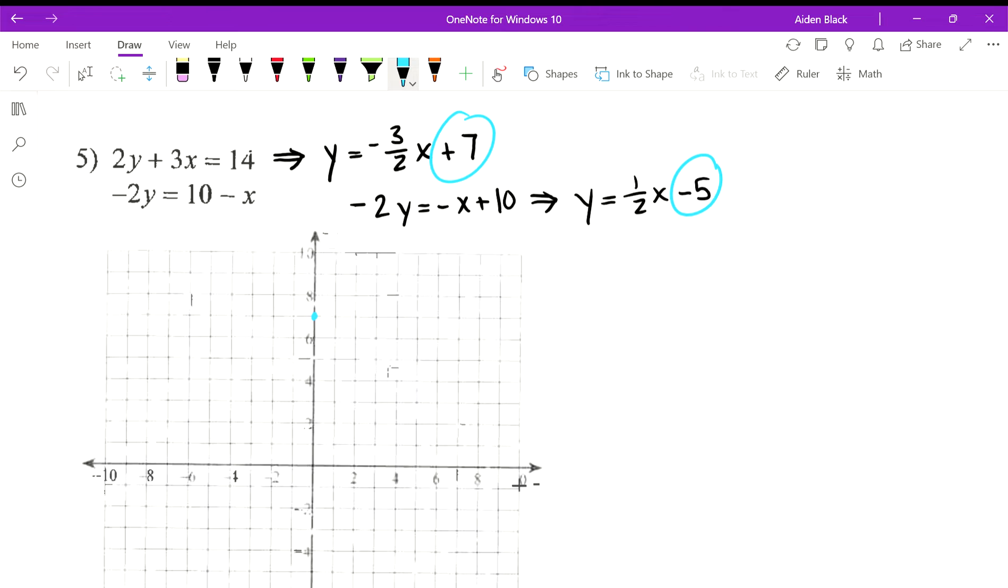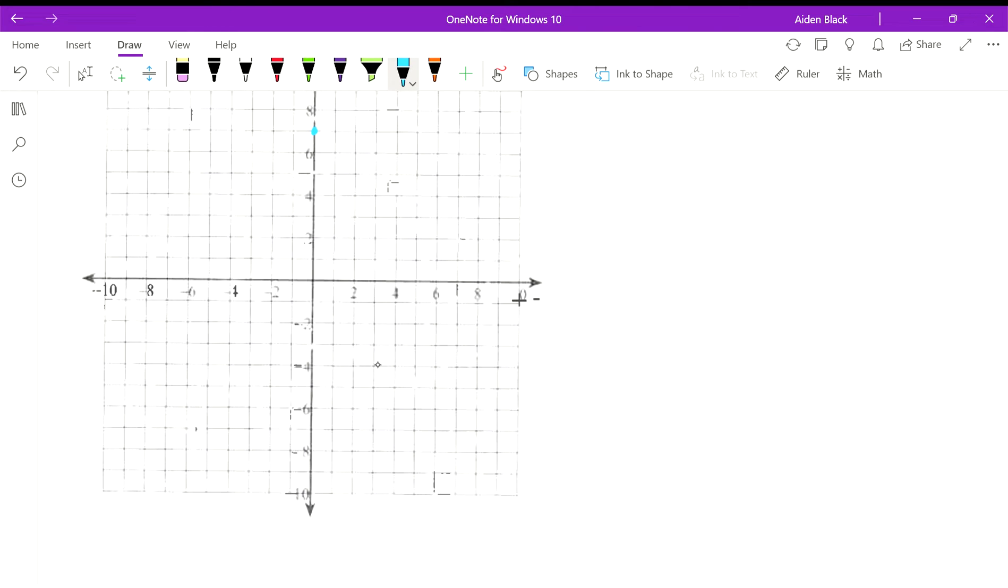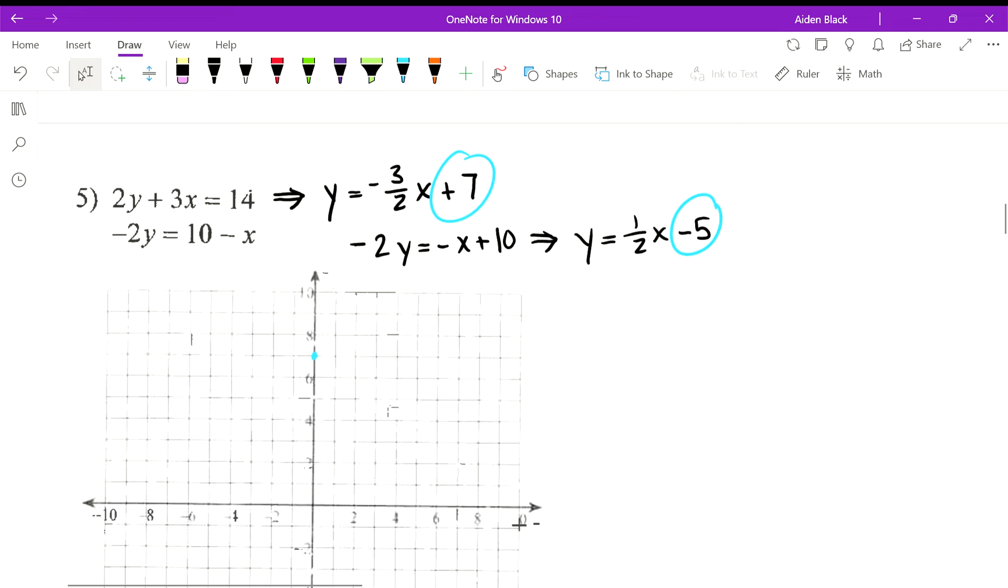So this should be positive one-half x minus 5, because 10 divided by negative 2 is negative 5. We have our y-intercepts, one is at negative 5, one is at 7. For the first one with the y-intercept of 7, our slope is negative 3 halves, so we will go down 3 and over 2.